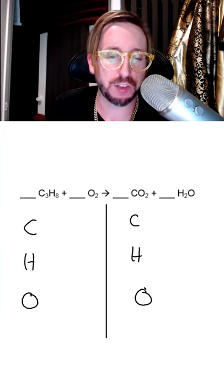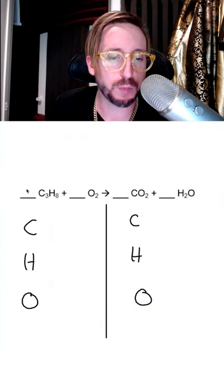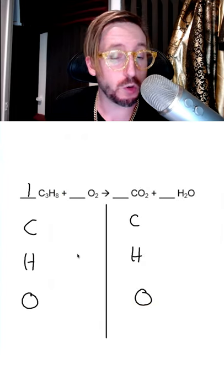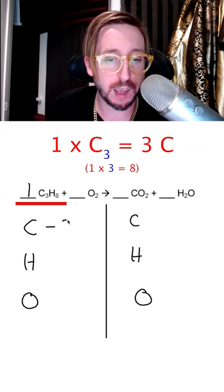Now what I'm going to do is look for the most complex thing, which in this case is the propane, and just put a 1 as the coefficient in front of it. Doing this, we can now count how many carbons are on the left side, which in this case are 3.